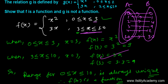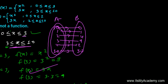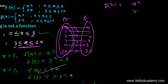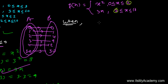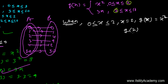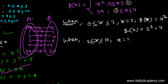Now let's look at g(x). It is also defined as x² and 3x, but the common overlap point is x = 2. When x is in [0, 2], g(x) = x², so g(2) = 2² = 4. When x is in [2, 10], g(x) = 3x, so g(2) = 3 × 2 = 6.